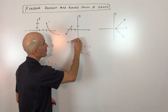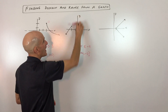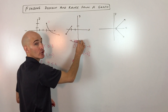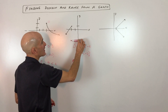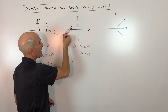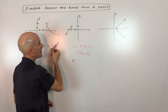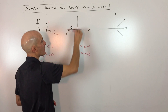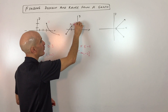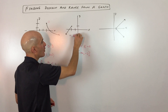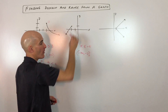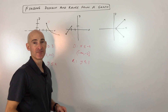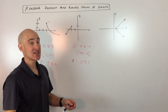Now for the range — those are the y values. I take a horizontal line and scan from low to high. The graph keeps going down, but when I scan up, there are no points above this top point here. So the y values go from one or below, meaning the range is y ≤ 1.